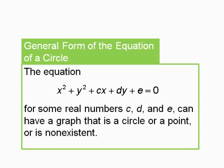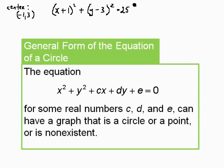Let's take a circle in center radius form — x plus 1 quantity squared plus y minus 3 quantity squared equals 25 — and convert it to general form. The center is negative 1, positive 3 using the sign trick, and the radius is the square root of 25, which is 5. To convert, foil the parentheses: x plus 1 times x plus 1 gives x squared plus 2x plus 1.